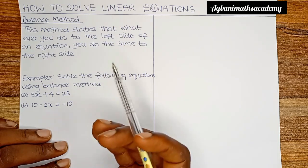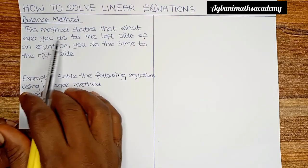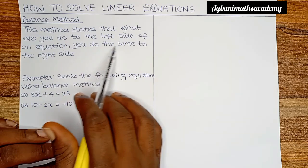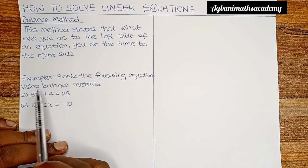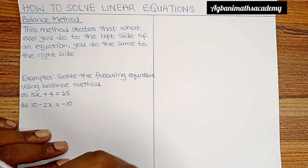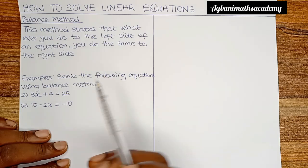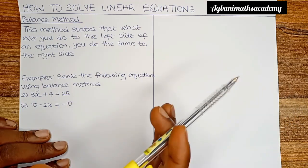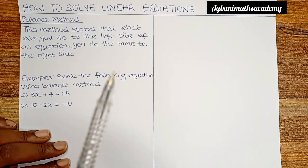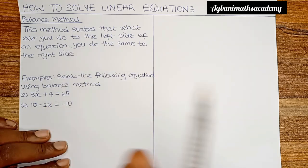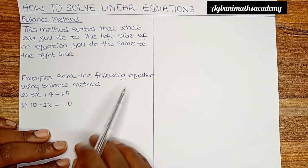The method we are going to use in solving linear equations is called the balance method. This method states that whatever you do to the left side of the equation, you do the same to the right side. In the process of solving an equation, what we are trying to do is find the value of the alphabet — also called the variable. You want to ensure that the alphabet is found on one side, either the left side or the right side. Every other item must be moved to the other side using the balance method.